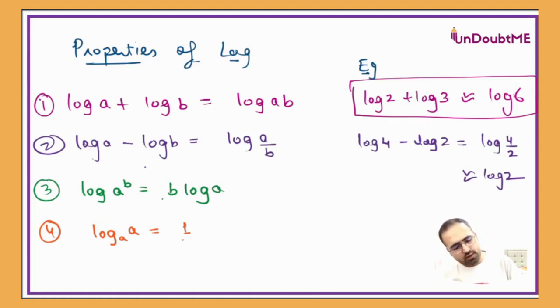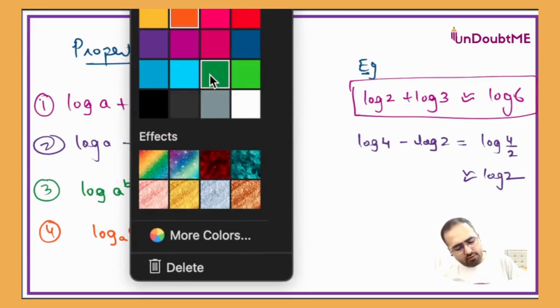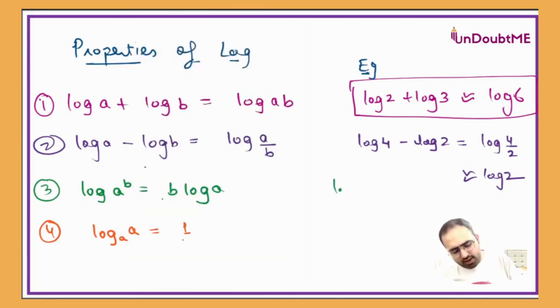So if I go with the example for property number 3, then it will be, let's say if I have log of 8. So 8 can be written as log of 2 cube, and this can be written as 3 log 2. So this is how we are going to use it in the questions.